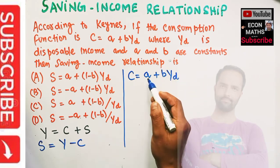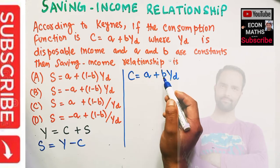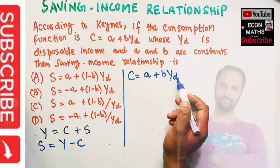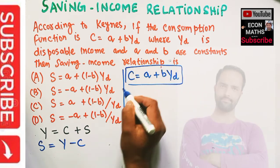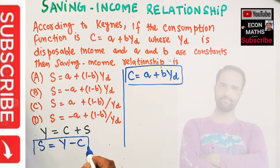A is our autonomous consumption. B is our marginal propensity to consume. Y_D is the disposable income. Let us put this relationship in this identity.